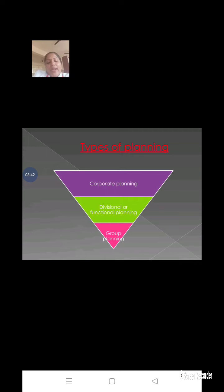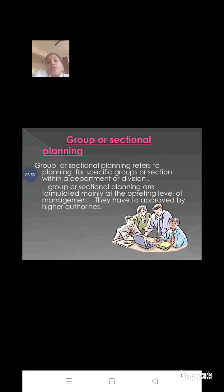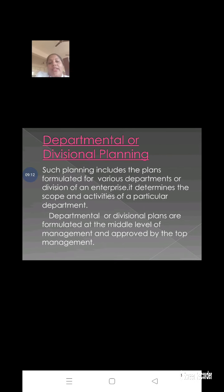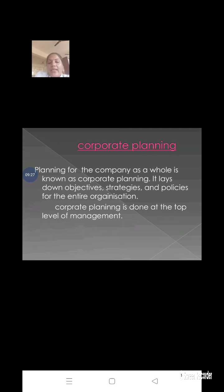The next topic is types of planning. Planning can be classified into three types. The first is corporate planning. The next is divisional or functional planning. And the third is group or sectional planning — group means a separate group within a department or division that has one plan to accomplish their work. Departmental or divisional planning means various departments make plans about their own work. Corporate planning is planning from top management about the whole company — what to do in the future.